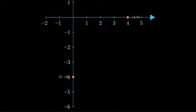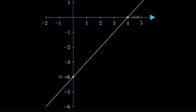Now that we have our two points, we can draw the line that passes through them. This line represents all the points that satisfy our equation, y equals x minus four.